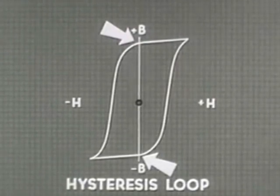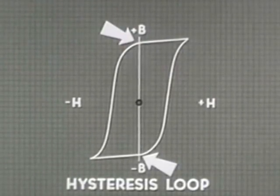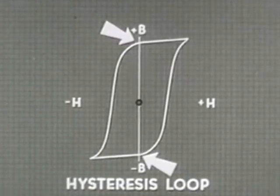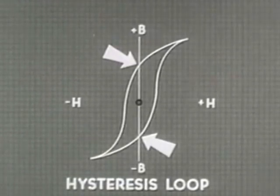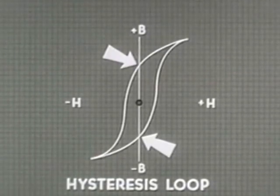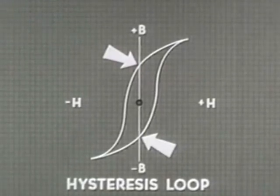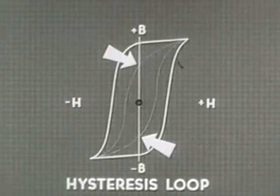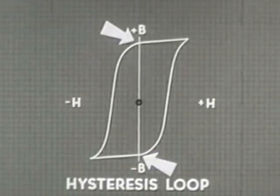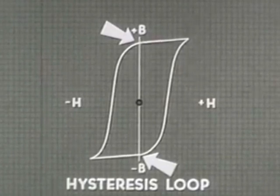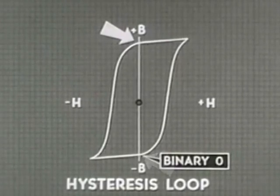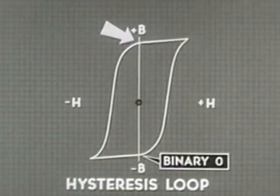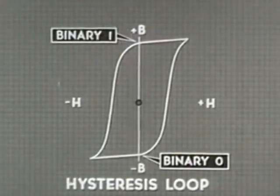The shape of the loop indicates the ability of a particular core material to retain magnetism. A shallow rounded loop means low residual magnetism — a core of this type requires less force during a switch from one state to the other. A rectangular loop means high residual magnetism — a greater amount of force is needed. If a core with a rectangular hysteresis loop is in the binary zero state, we're going to have to apply a substantial pulse of non-dot current in order to set it to binary one. A lesser pulse just won't make the switch.